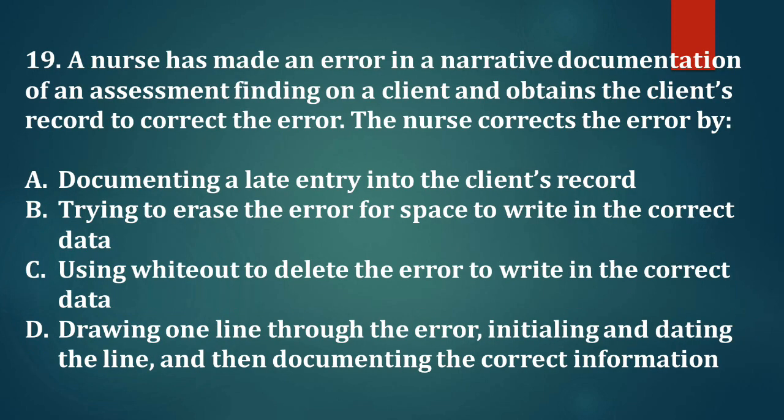Question 19. A nurse has made an error in a narrative documentation of an assessment finding on a client and obtains the client's record to correct the error. The nurse corrects the error by: A. Documenting a late entry into the client's record. B. Trying to erase the error for space to write in the correct data. C. Using whiteout to delete the error to write in the correct data. D. Drawing one line through the error, initialing, and dating the line, and then documenting the correct information.